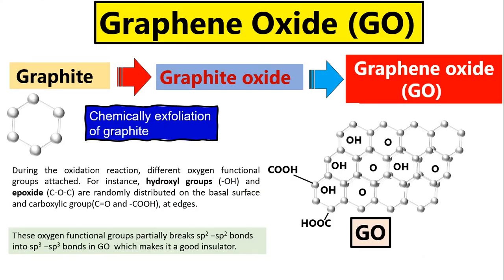Before I discuss graphene oxide further, the role of graphene oxide is basically as a precursor for graphene. When we reduce graphene oxide, we get reduced graphene oxide, which can also be called essentially pure graphene. So basically, when we oxidize graphite to get graphite oxide and then graphene oxide, this leads us to reduced graphene oxide.